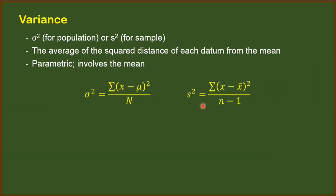We have these two formulas. One formula is for the variance of the population, symbolized by small letter sigma squared. And this one is the formula for variance for sample, symbolized by small letter s squared. They are quite similar, except for their denominator. In the variance for the population, we just have the denominator N, whereas for sample, we have the denominator of n minus 1.